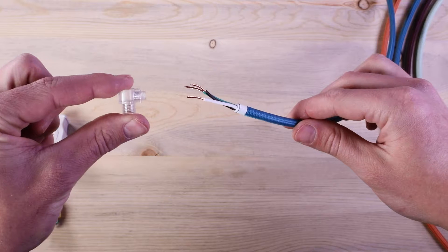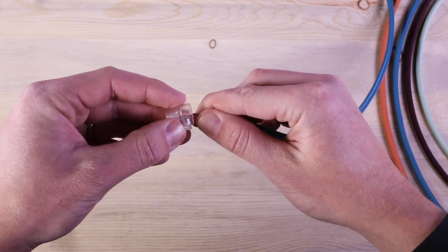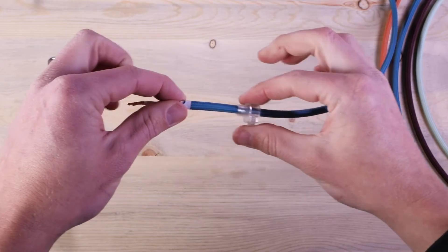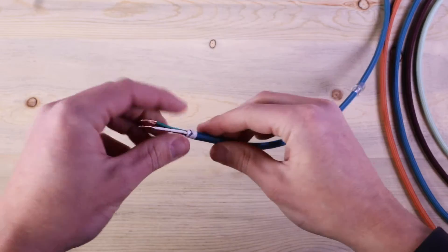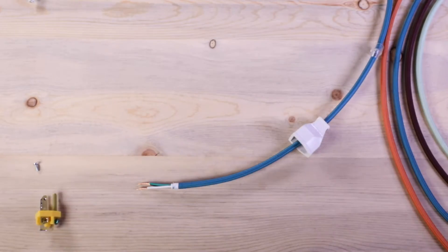The next step is to slide the barrel cord grip over the cord with the threaded end facing the stripped wire. While a cord grip is optional, we recommend using it for securing the cord in place so the conductor wires don't get pulled from the terminals. Next, you'll slide the housing over the color cord with the larger end facing the stripped wires.